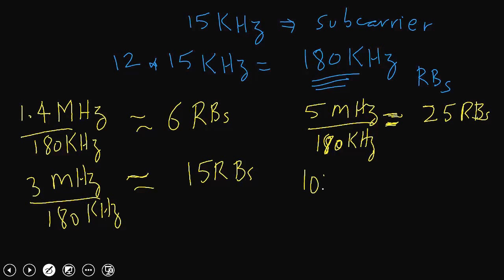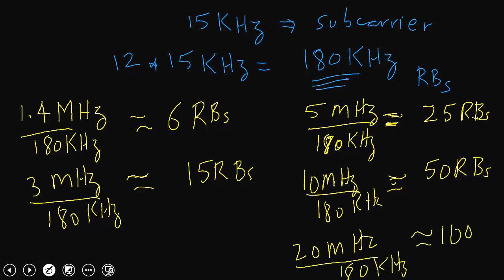So if 5 megahertz can get 25 resource blocks, then 10 megahertz will have twice of 5 megahertz, which is 50 resource blocks. And similarly, 20 megahertz will have twice of 10 megahertz, which is 100 resource blocks.